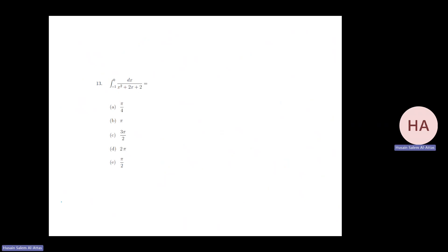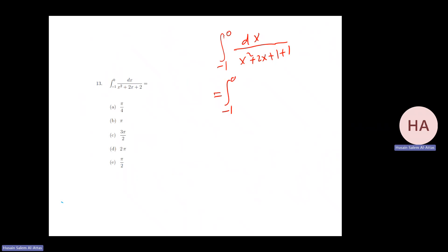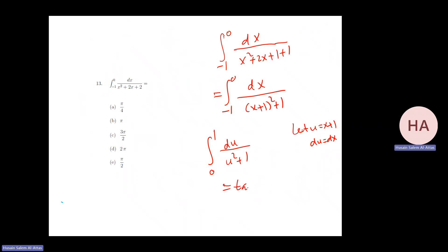For dx over x squared plus two x plus two, what I will do is complete the square. That gives dx over x squared plus two x plus one plus one, which is (x plus one) squared plus one. Now I let u equal x plus one, du equals dx. Changing bounds from zero to one gives du over u squared plus one from zero to one, which is tan inverse of u from zero to one. That gives tan inverse of one equals π/4, minus zero, which is π/4.